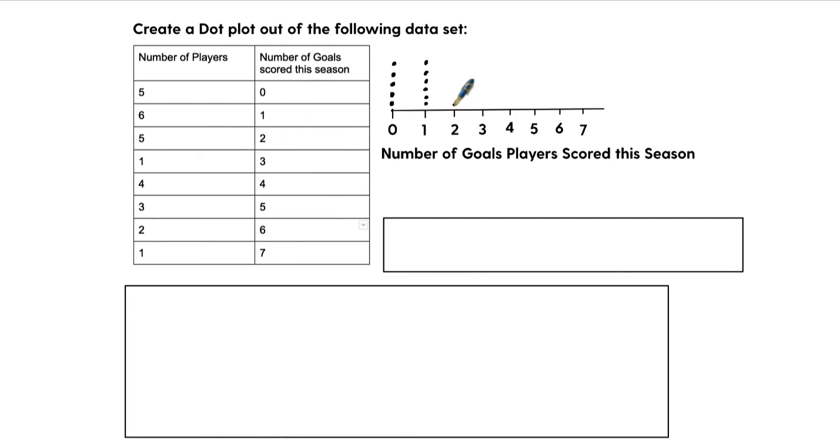And so for two goals, it'll be five. So one, two, three, four, five. There you can tell. And for three goals, we have one. Four goals, we have four. One, two, three, four. Five goals, three. One, two, three. Six goals, two. And seven is one. So that would be the dot plot.